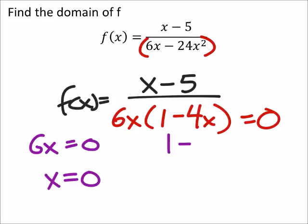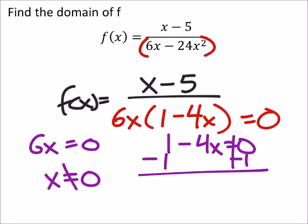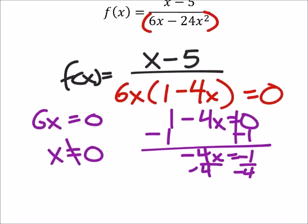On the other hand, we've got 1 minus 4x. If that equals 0, then that value of x is out of the domain. So I should write that. It does not equal 0. So I would subtract 1 from both sides. I get negative 4x equals negative 1. Divide both sides by negative 4, and I get x cannot equal positive 1 fourth.